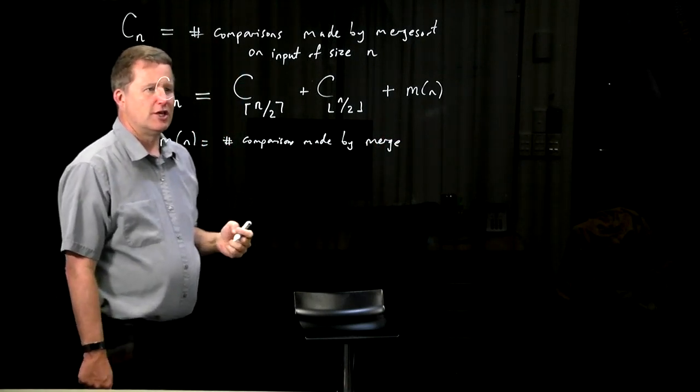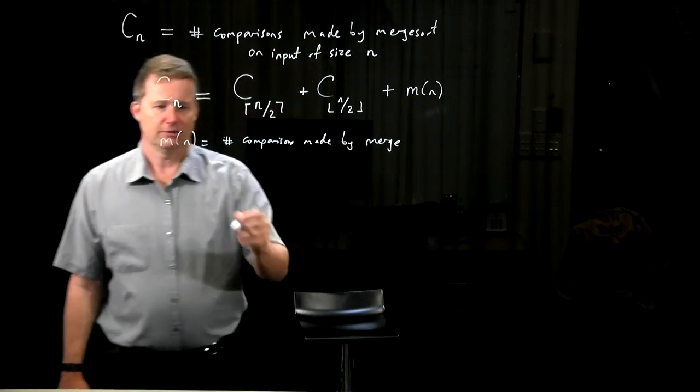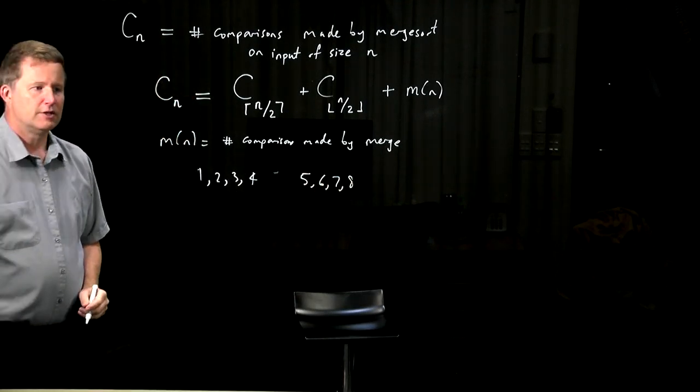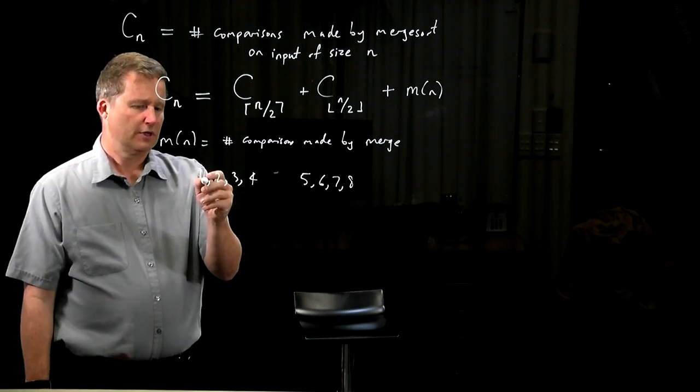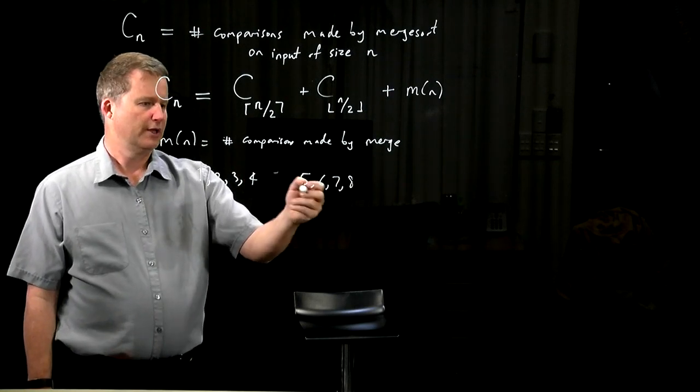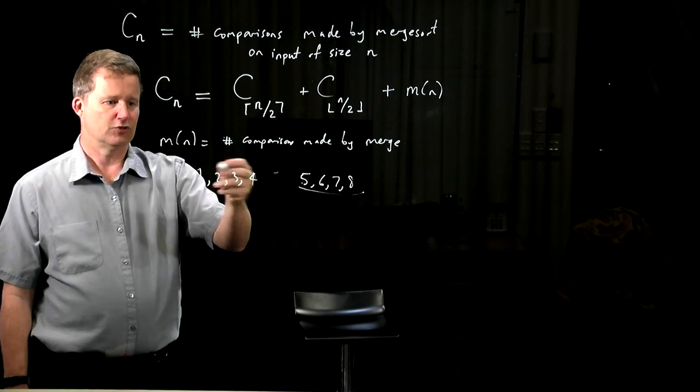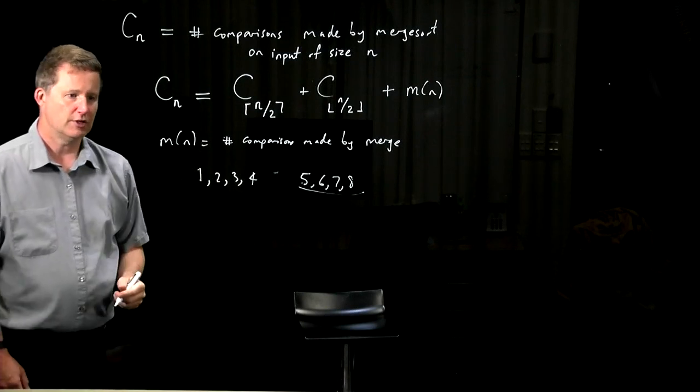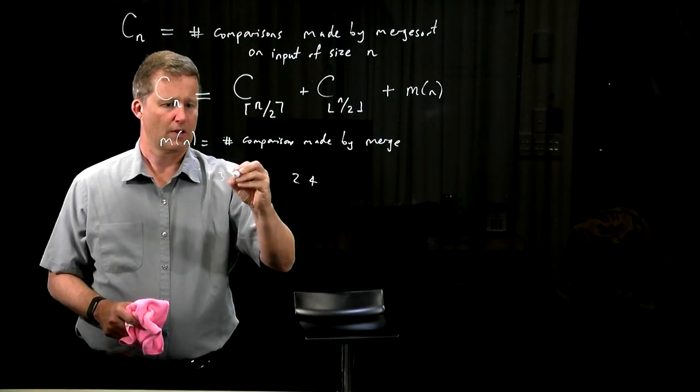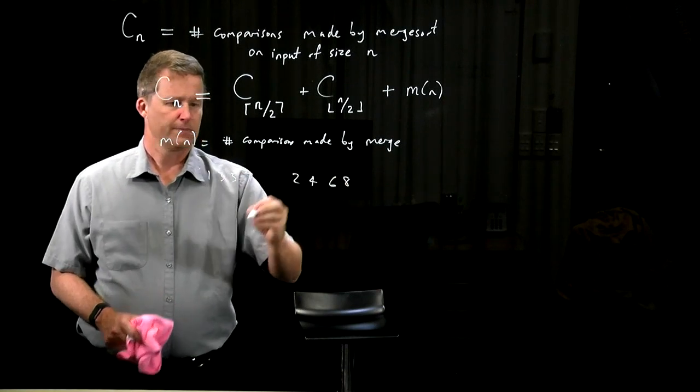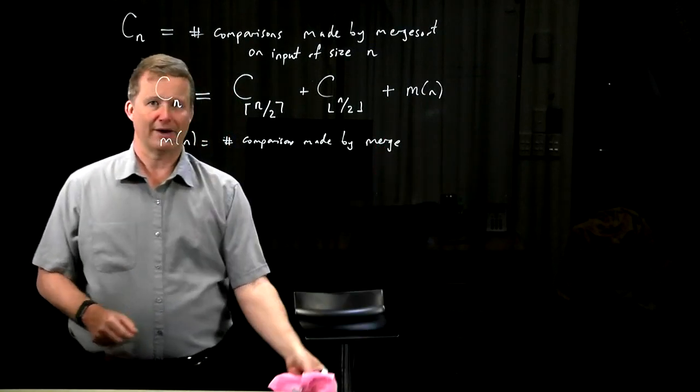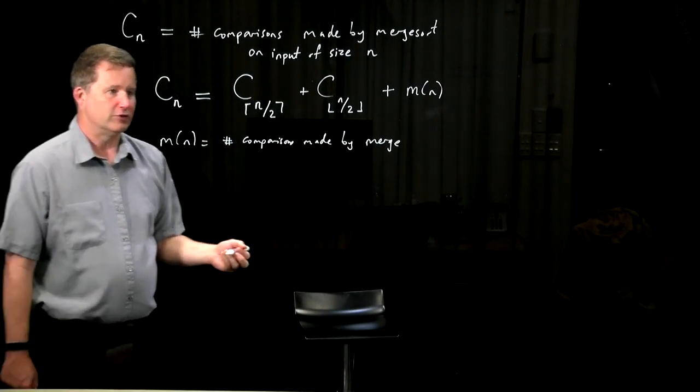The thing here is that merge does different numbers of comparisons depending on the size of the input. Suppose you had an input that looked like this and another one that looked like that. Then when you merge them together you will compare only four times and then you will copy the rest of this onto the output list because these four elements have already gone. This list has already been exhausted. On the other hand, if you choose them to alternate, then you'll bounce around and you'll actually do n minus one comparisons. So it's some number between one actually and n minus one or maybe between n over two and n minus one.